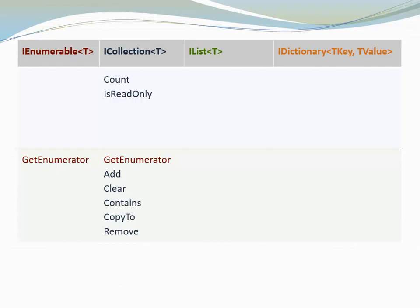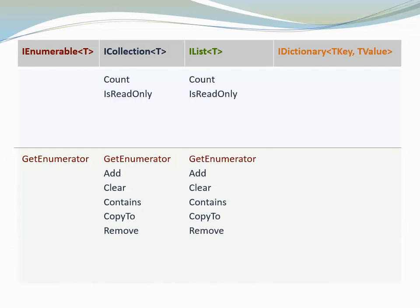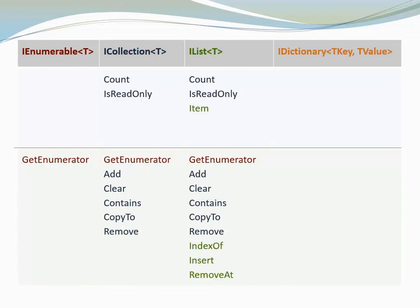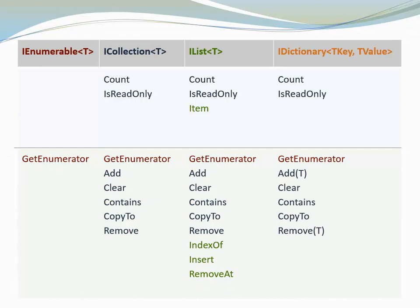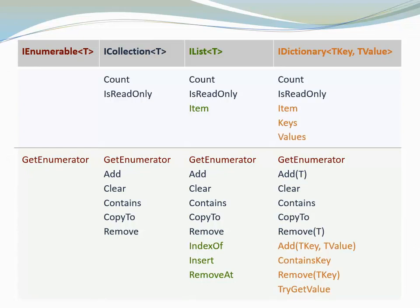IList extends ICollection. It inherits all the ICollection interface members and adds its own ones. IDictionary extends ICollection. Again, it inherits all the ICollection interface members and again it adds its own ones.